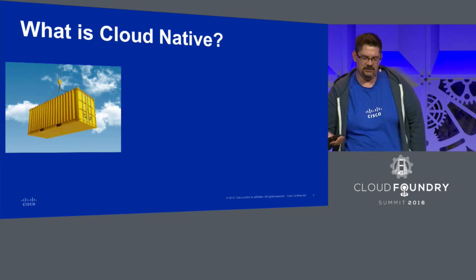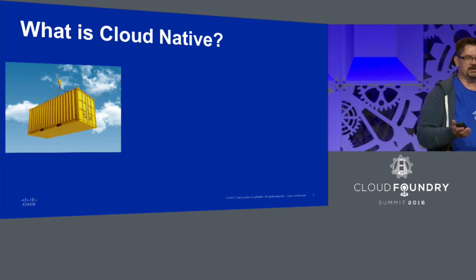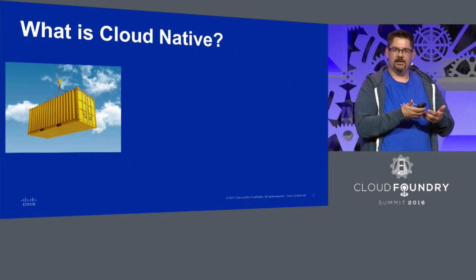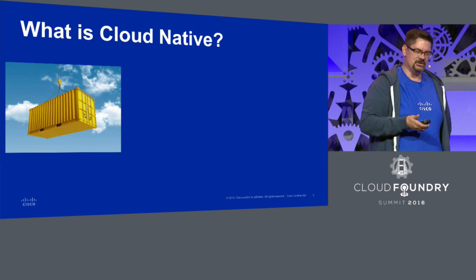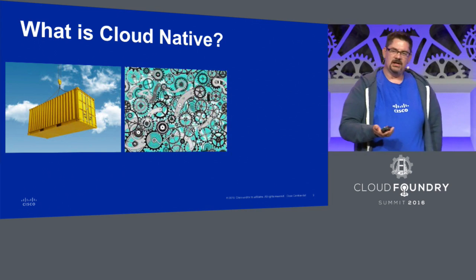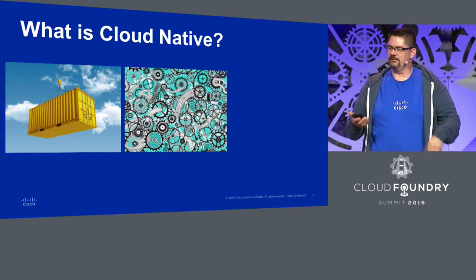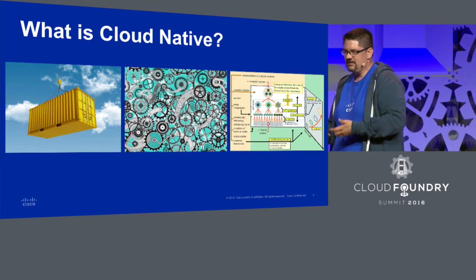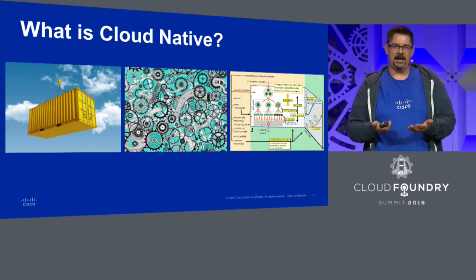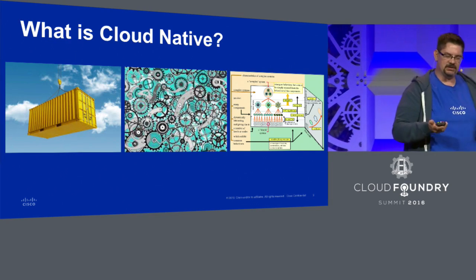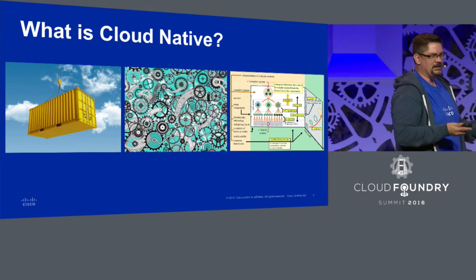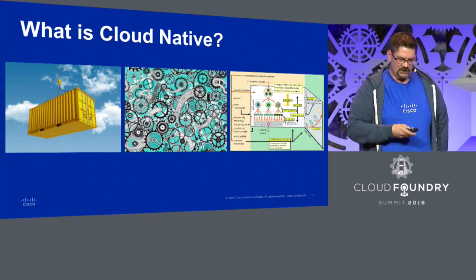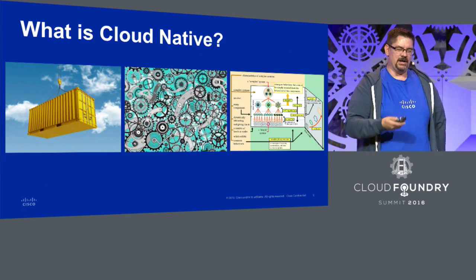What is cloud native? Cloud native is simply defined by these three different areas. You have container packaged — how do you take an application and break it into smaller component pieces? It's the orchestration and dynamic management of that application. And the last thing, which gets overlooked a lot, is this whole new application architecture and design pattern that is microservices enabled — how do you take an application and break it into smaller components that you can then containerize?